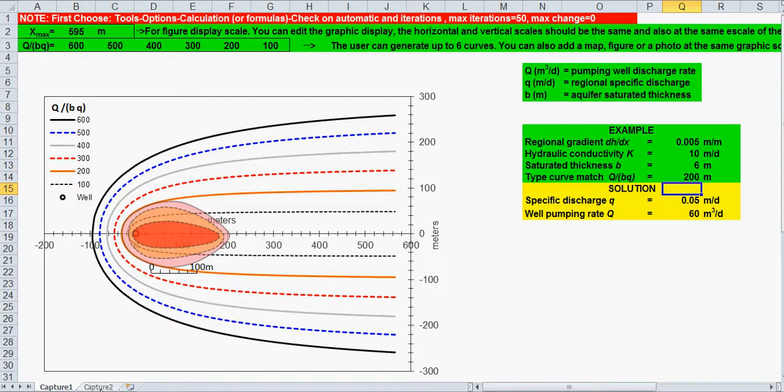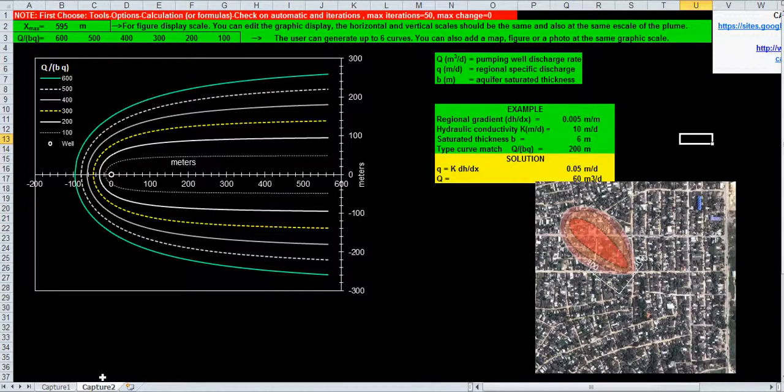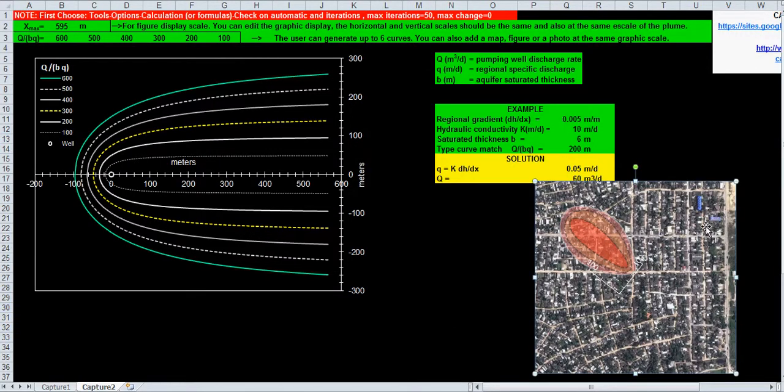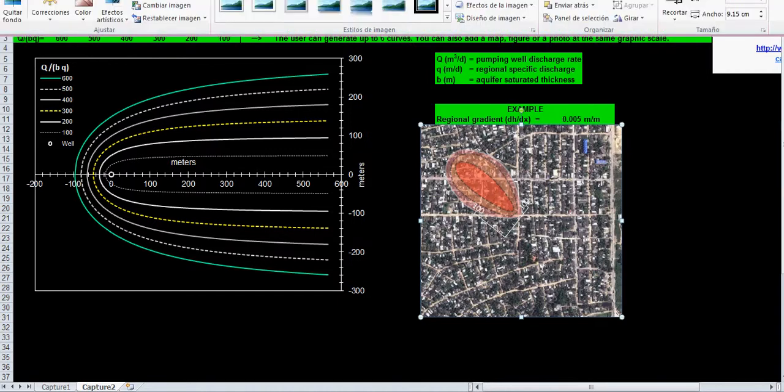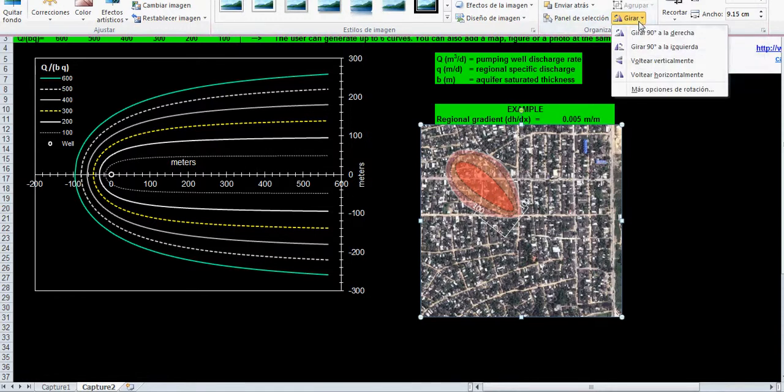Here in this Capture 2 spreadsheet is exactly the same problem but the plume is within a map, located on a map, as in this figure in a Google Earth picture. So, you have to align in the X direction. So, just with the Rotate option. Here is in Spanish. Sorry for that but it is the same in other languages.